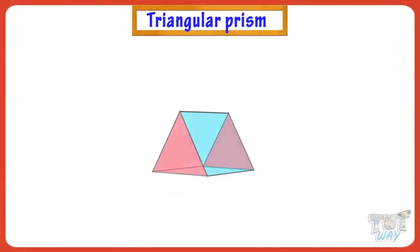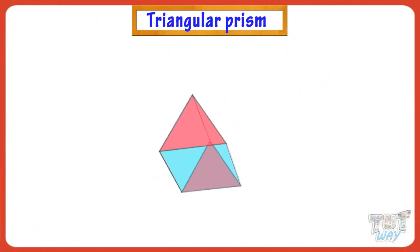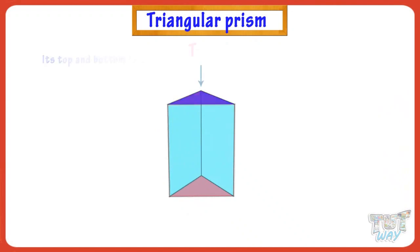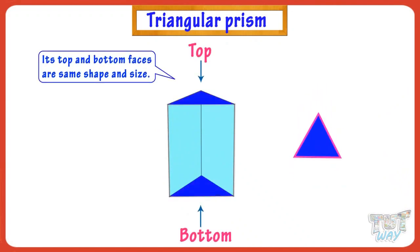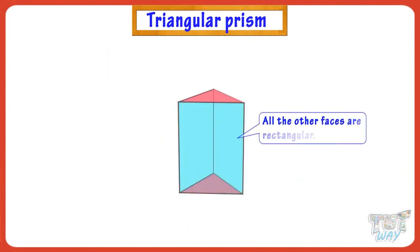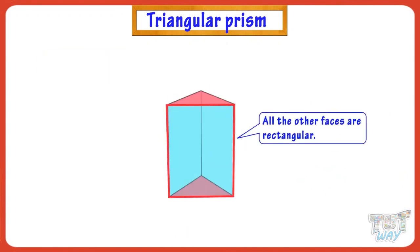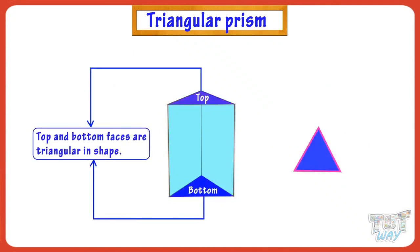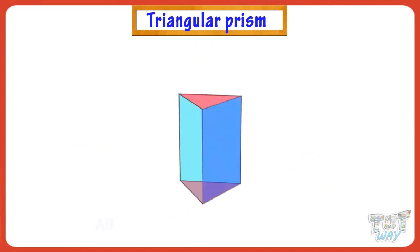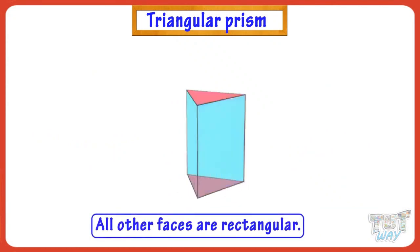Here we have a triangular prism. A prism is a 3D shape in which the top and bottom faces are the same shape and size, and all the other faces are rectangles. Here, the top and bottom faces are triangular in shape, and all other faces are rectangular.